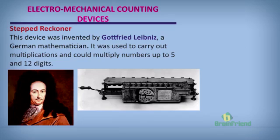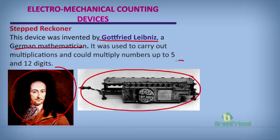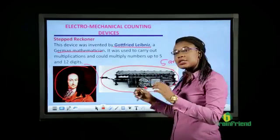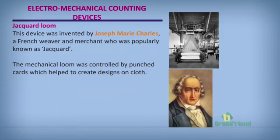The Stepped Reckoner was invented by Gottfried Leibniz, a German mathematician. It is used to carry and multiply numbers of up to 5 and 12 digits, meaning you can multiply numbers with 5 digits and even up to 12 digits easily.